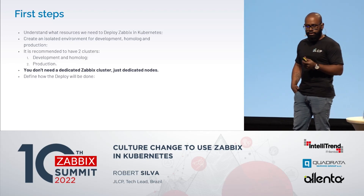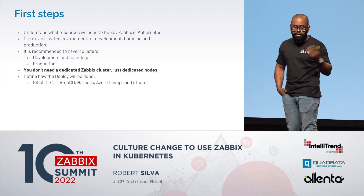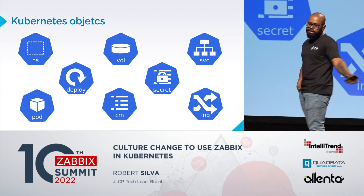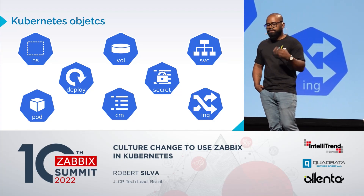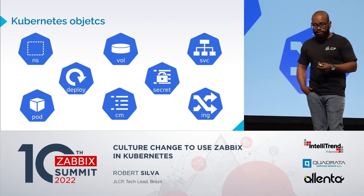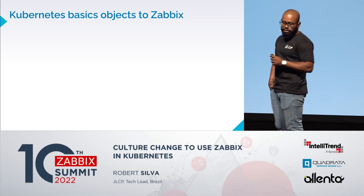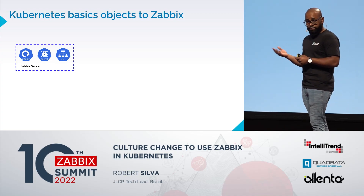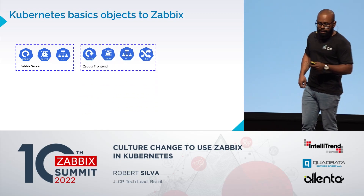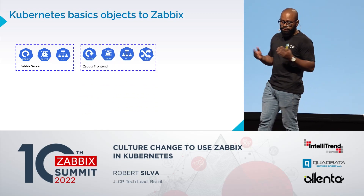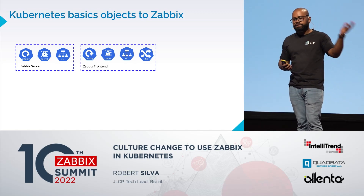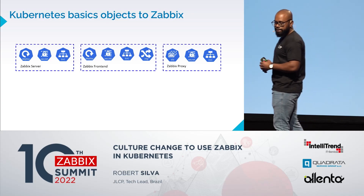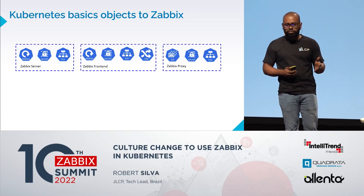You need to define how deployments will be done — for example, using GitLab CI/CD, Argo CD, Harness, Azure DevOps, or other technologies. Regarding Kubernetes objects: you have namespaces, deployments, volumes, ConfigMaps, ingress, and services. For basic Zabbix server objects, you need a deployment, a secret for defining your database credentials, and a service. For Zabbix frontend, you need an additional component — the ingress for external browser access. For Zabbix proxy, you need to change the deployment to a StatefulSet object.